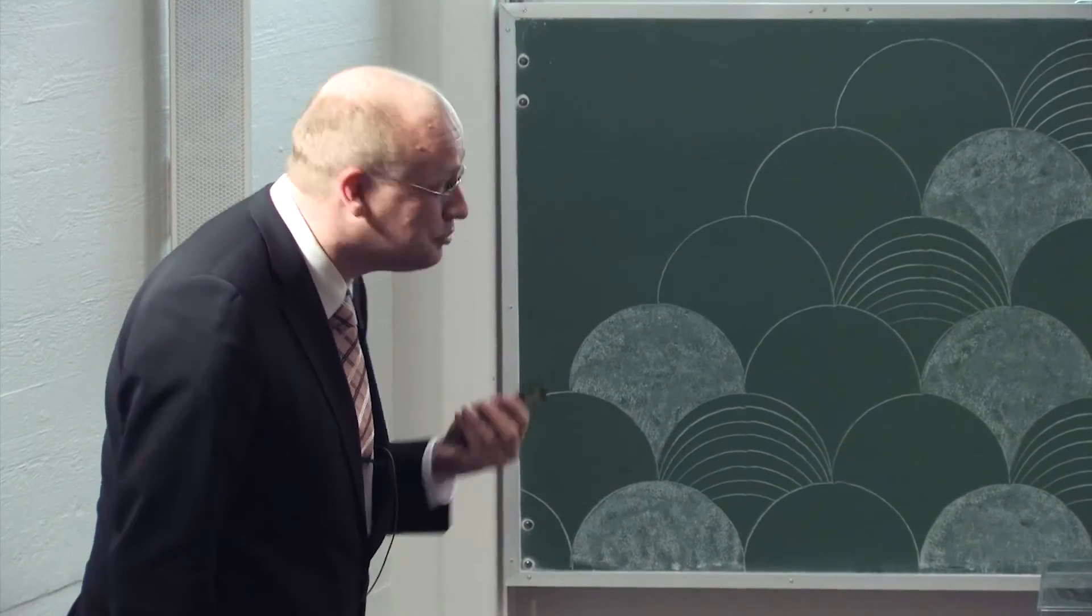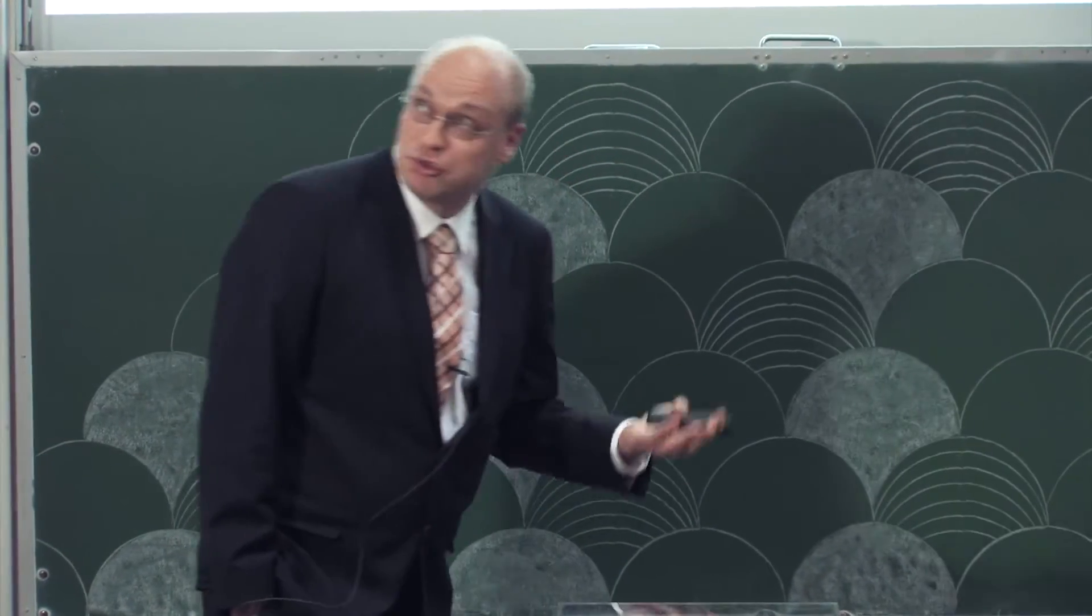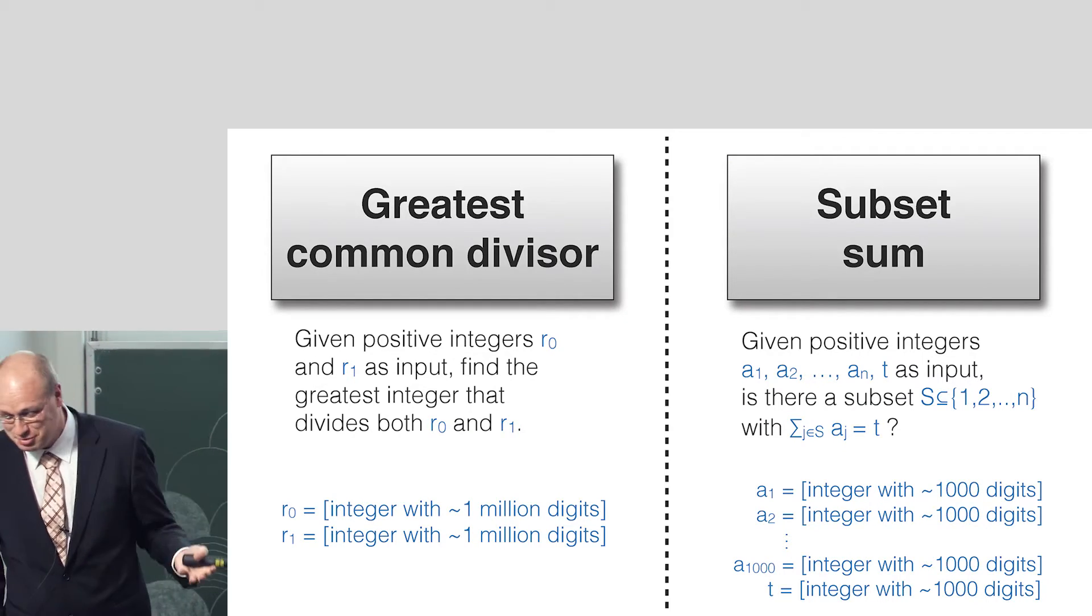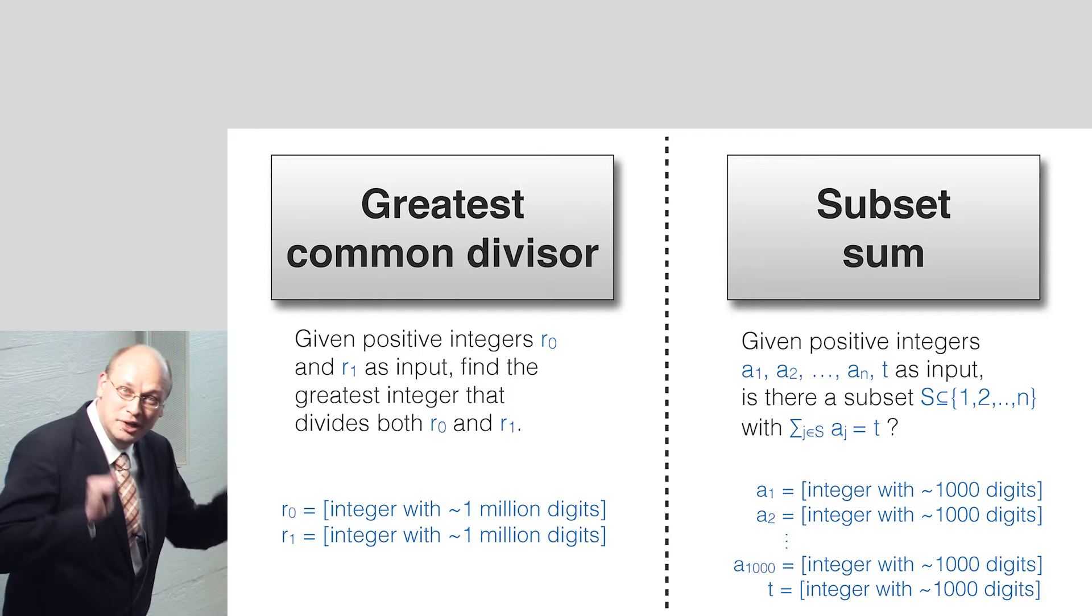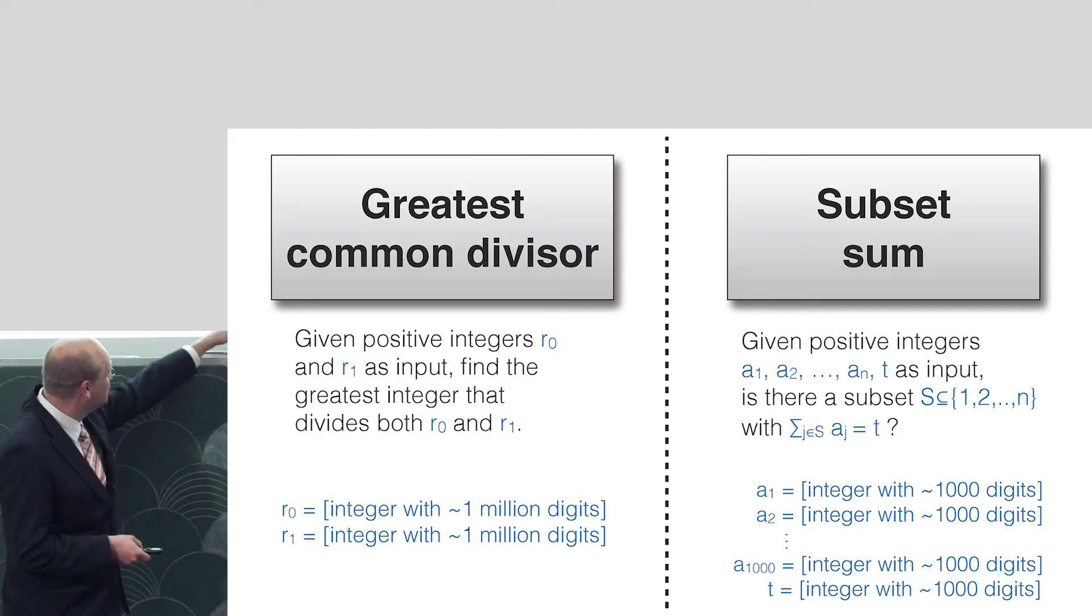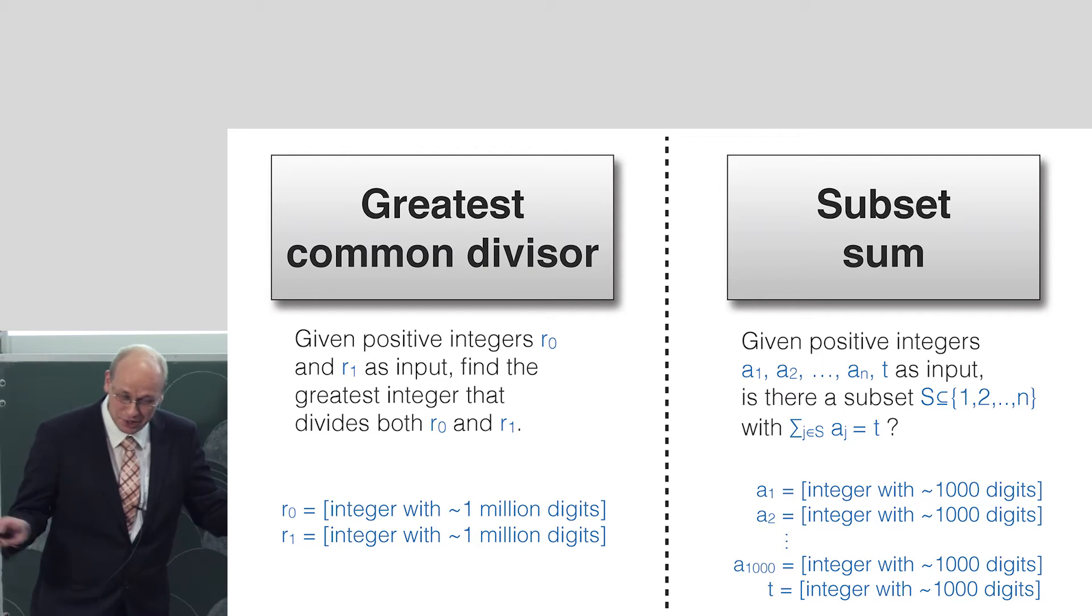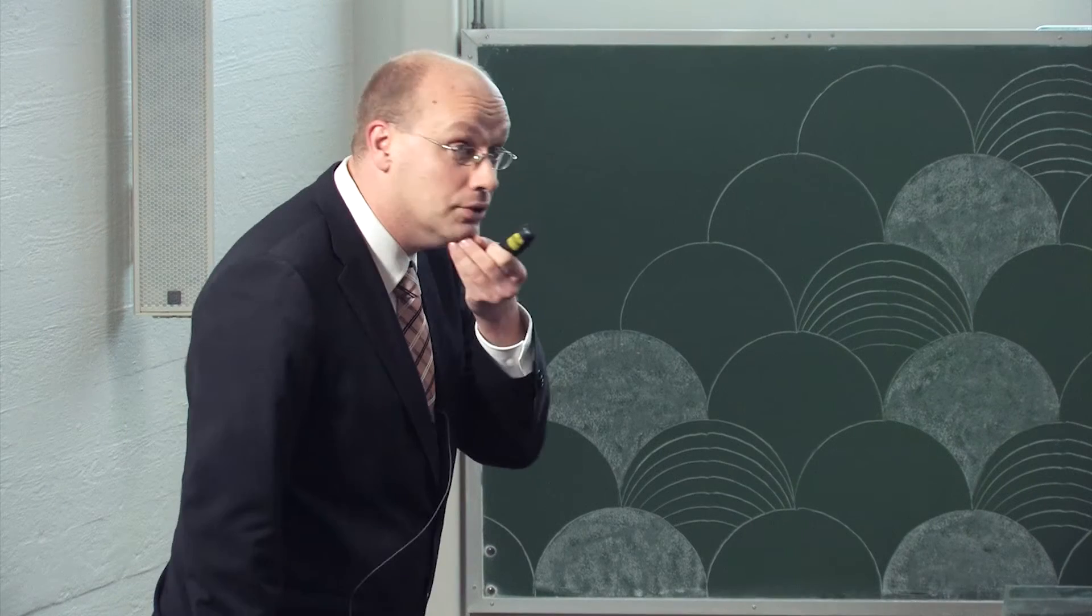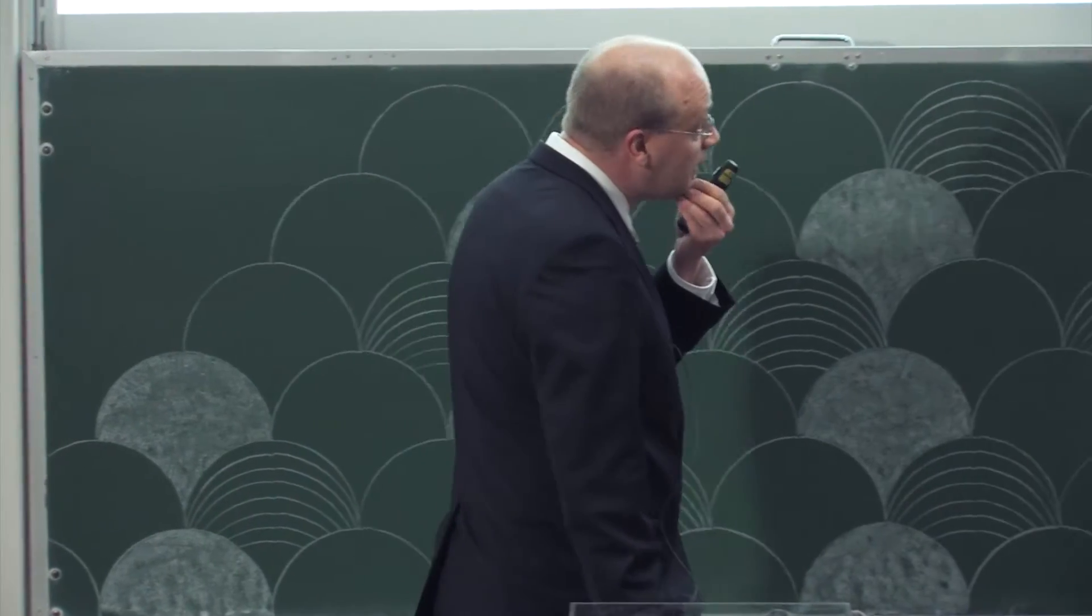But an algorithm designer wants to have generic solutions and we want scalability. What if the inputs are larger? Let's think about variant of the problem. Suppose now here on the left-hand side, we have two integers with about one million digits. And on the right-hand side, we have 1,000 integers with about 1,000 digits each. It's a little bit bigger, but not that large. If you think in terms of megabytes, it would be about one megabyte in total. Pretty small in today's terms.